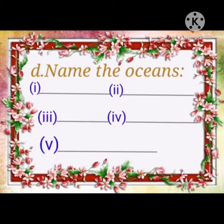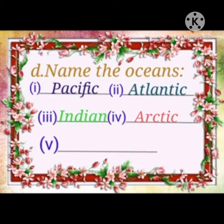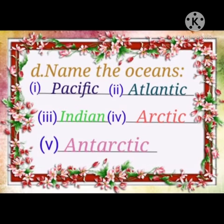Next is: name the oceans. Write Pacific in the first blank, Atlantic in the second blank, Indian in the third blank, Arctic in the fourth blank, and Antarctic in the fifth blank.